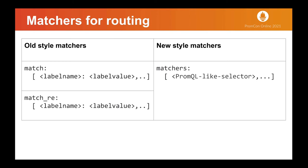Matchers for routing. A route block defines a node in a routing tree and its children. If an alert does not match any children of a node, the alert is handled based on the configuration parameters of the current node. In this slide, you can see that the new matchers add support for negative matching and combine the equality and regex matchers.